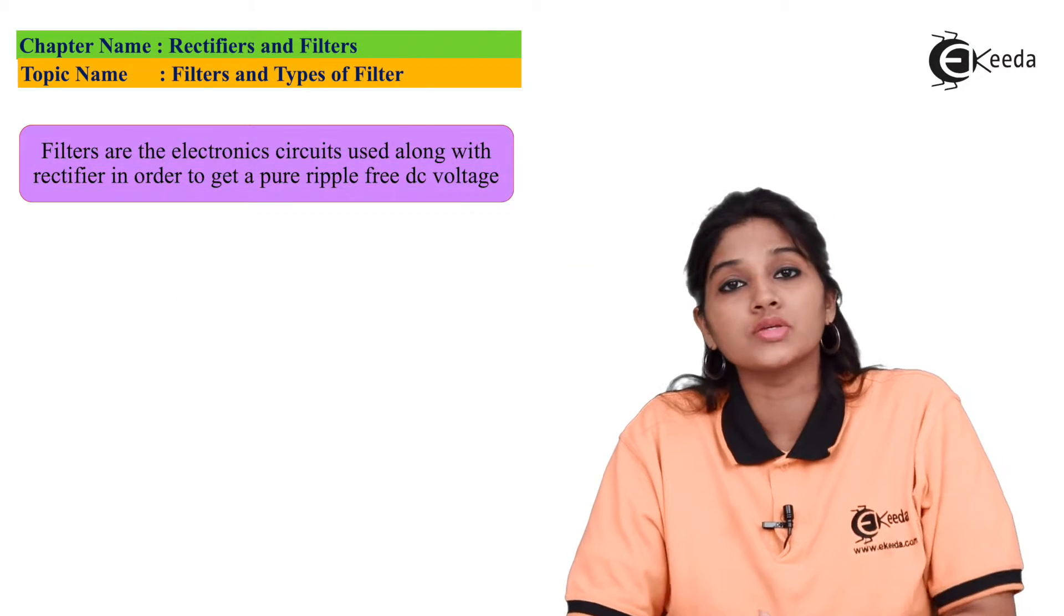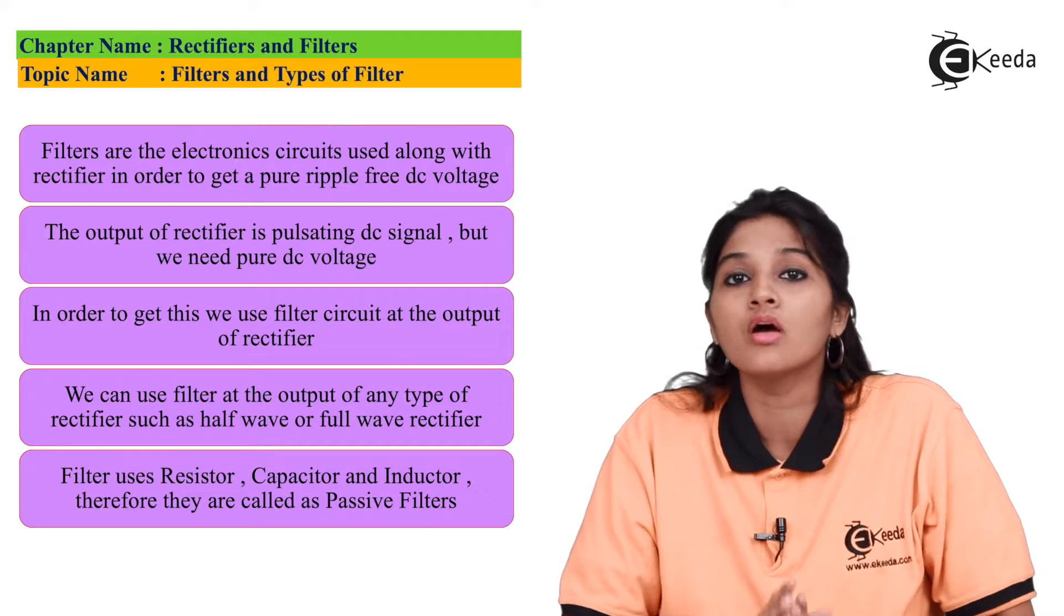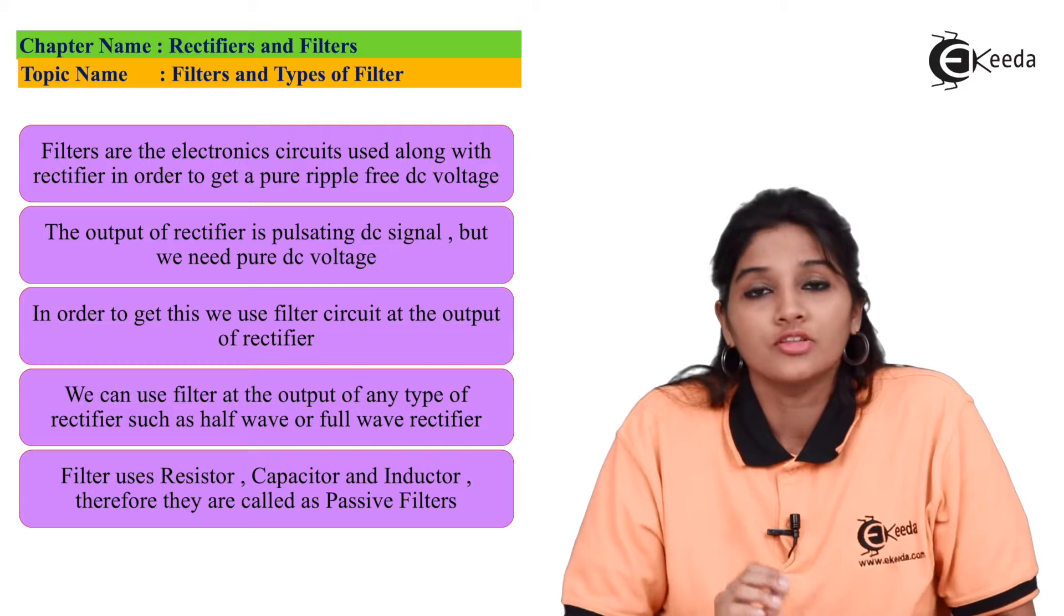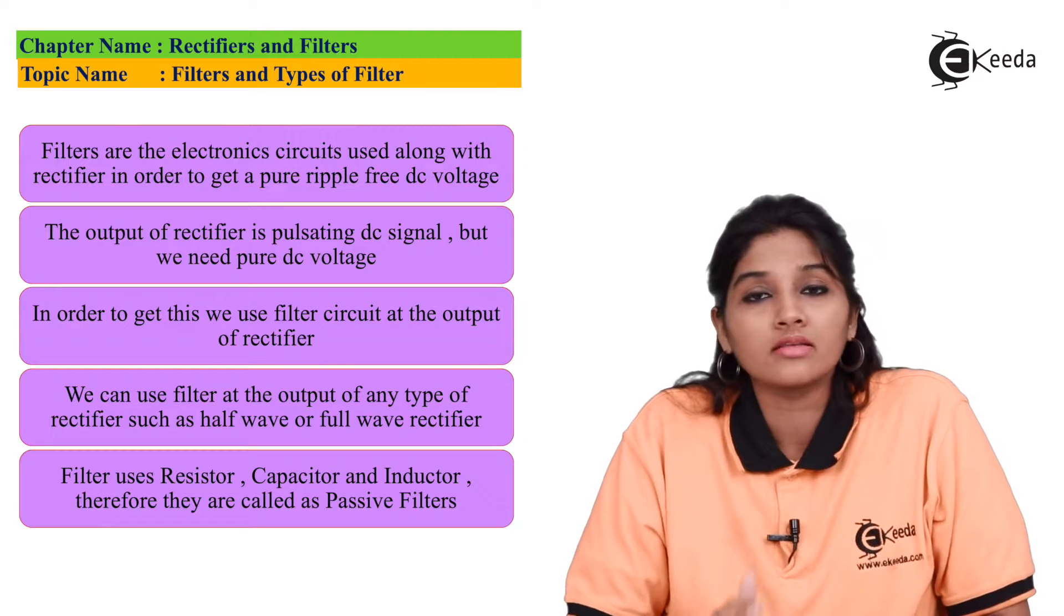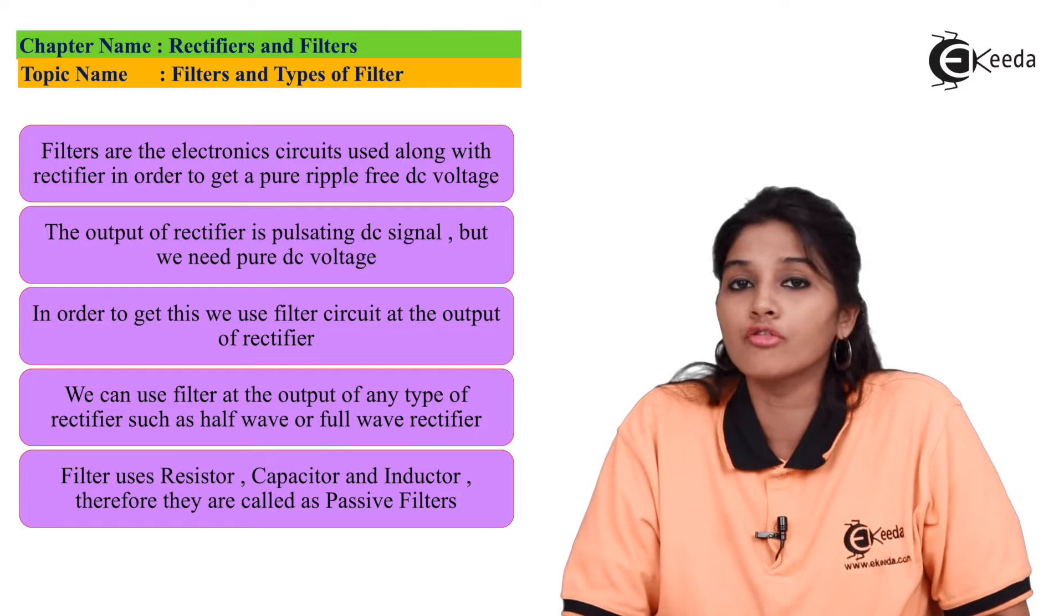So filter circuit is basically an electronic circuit that is used for removal of AC component from the rectified output. The filter circuit can be connected at the output of rectifier that can be a half wave rectifier or full wave rectifier.